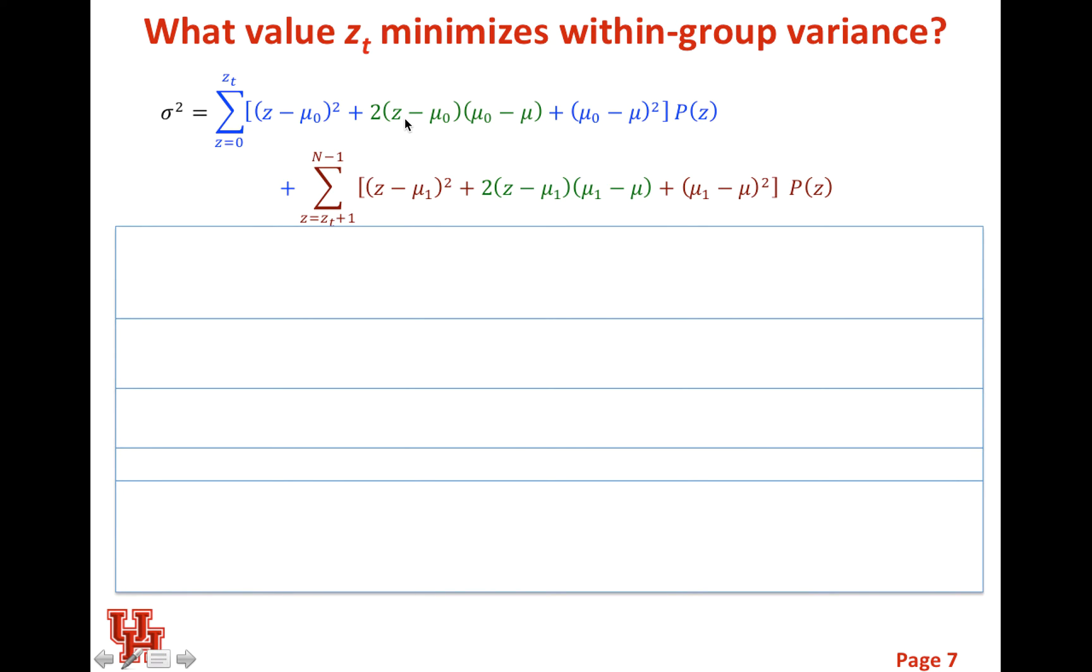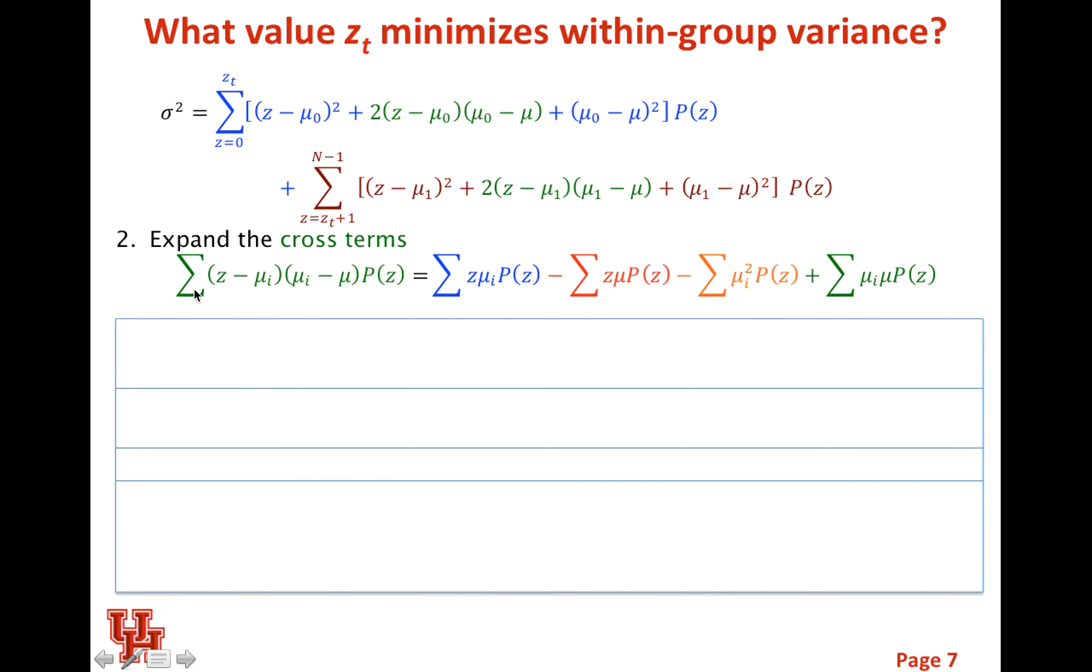I've got sigma squared, and I'm going to just expand these cross terms. I'm taking my first μ, I'll just say μI, that way I can cover both of these, and I'm going to drop off the summations. Instead of saying it's from 0 to Z2, I'll just say that it's a summation over our Z values. Then we multiply this through, so we've got Z times μI, and then we've got minus μI times μI.